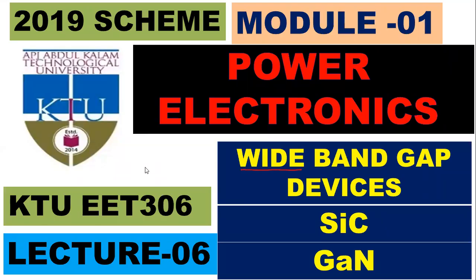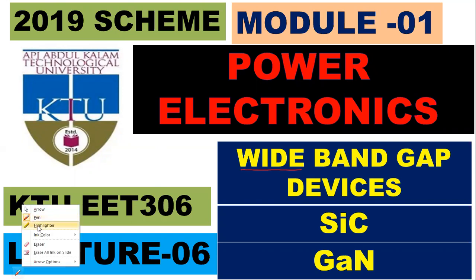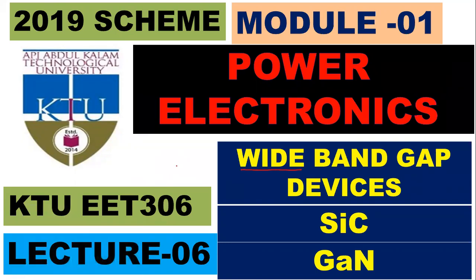In this session we will study about wide band gap devices. You might have studied about semiconductors — there will be a valence band and a conduction band. We are studying about wide band gap devices: silicon carbide and gallium nitride. It has some advantages compared to normal semiconductor devices; it is also a semiconductor device.